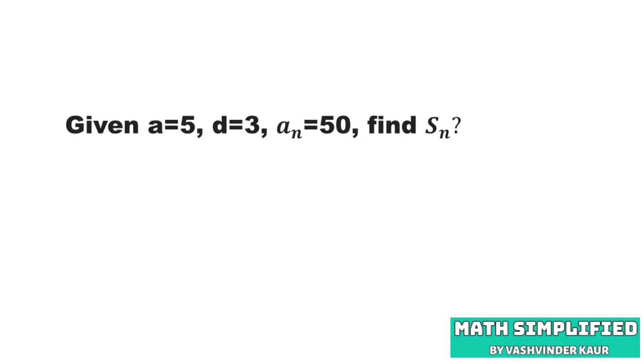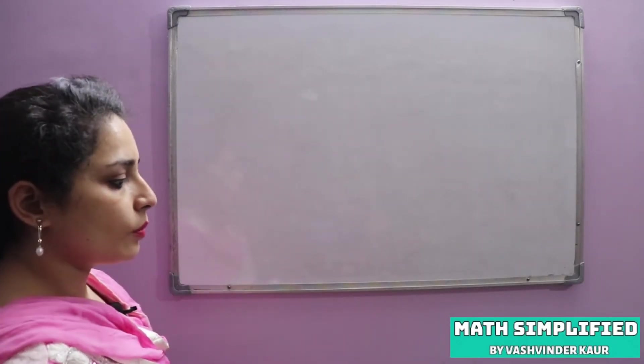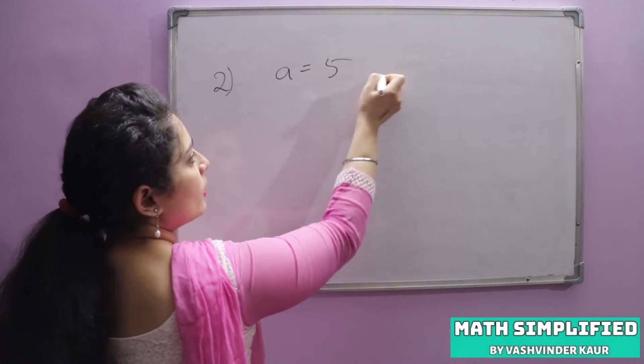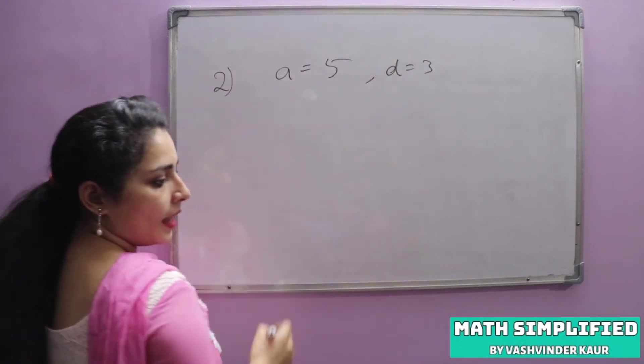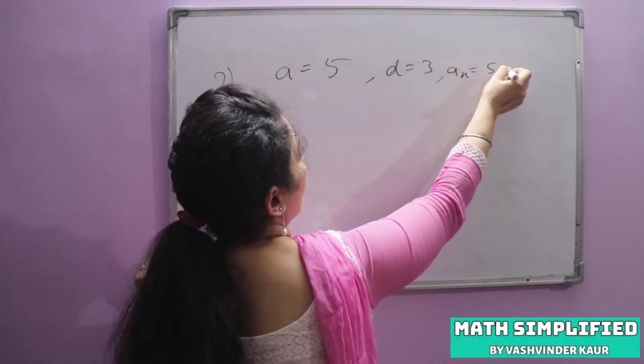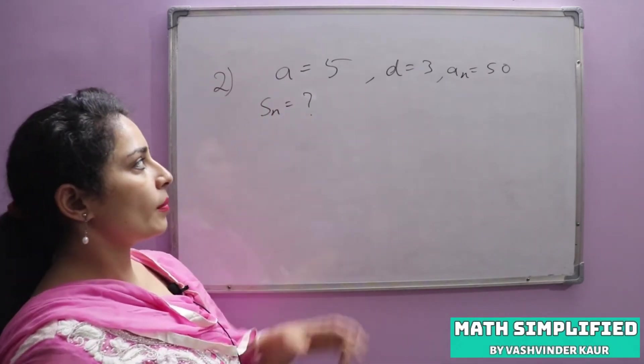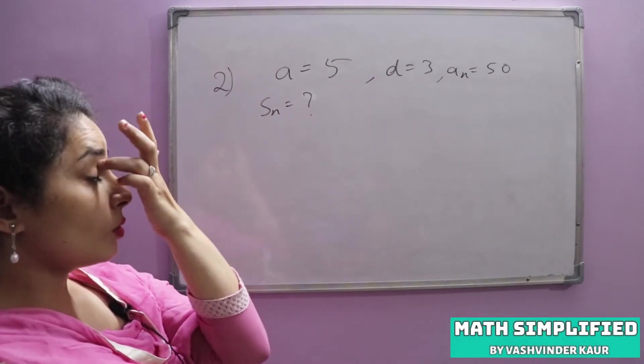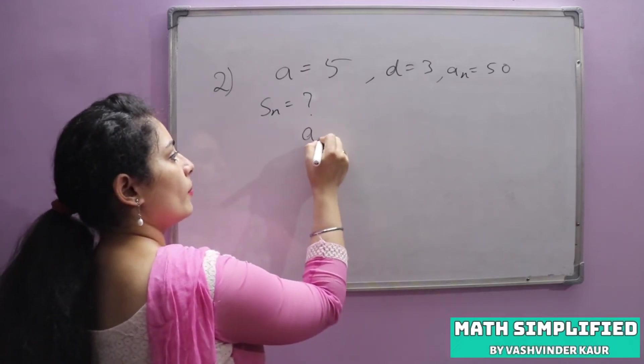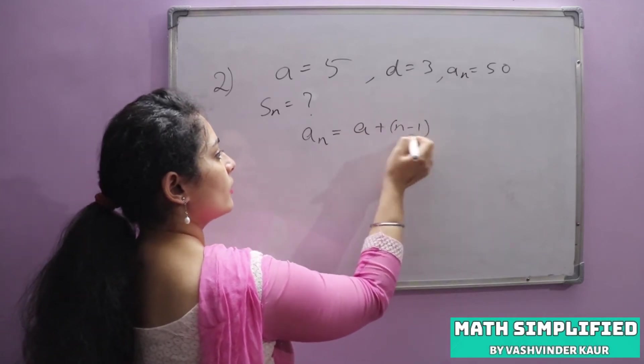Second question, we have a given that is 5, d given 3, and an given that is 50. And we have to find Sn. Which we will find n first. We will find n, that is a plus n minus 1d.